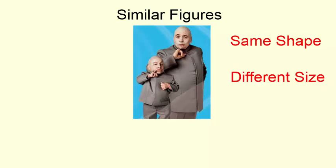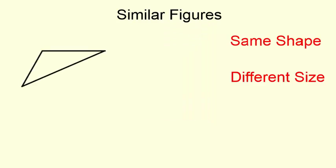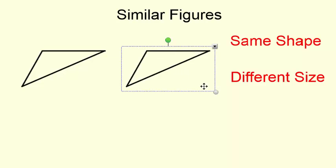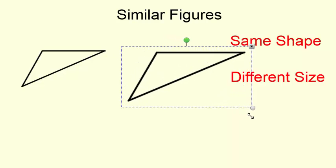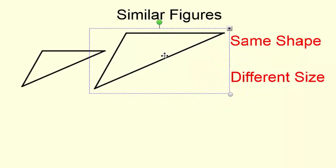So Mini-Me and Dr. Evil, same shape, different size. How does that look for shapes? We're going to look at all kinds of different shapes. Basically, we're going to take something like here's a triangle and I'm going to make it bigger. So we would say these two triangles are similar. It's exactly the same shape, but it's a different size.